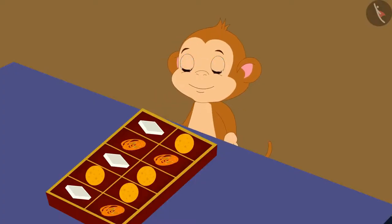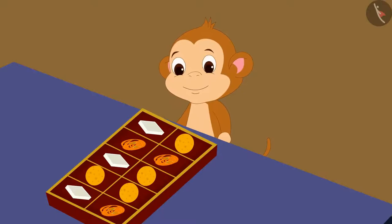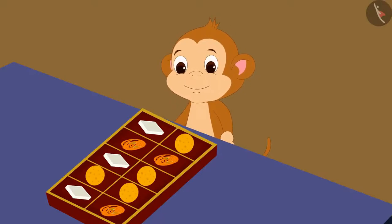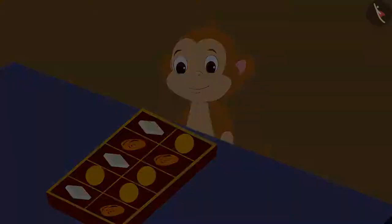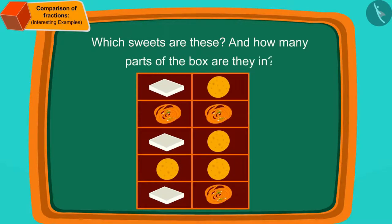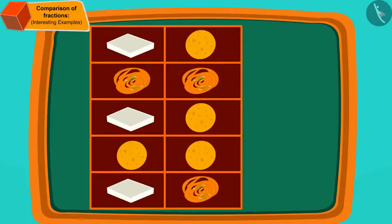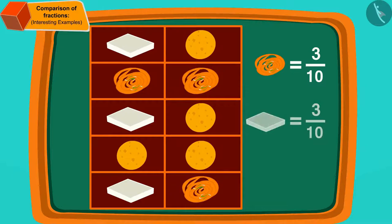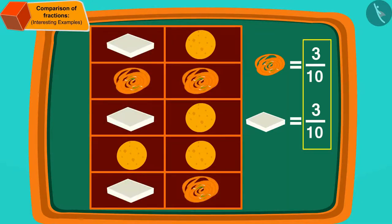When Babban looked at the box of sweets, he saw that there are 2 sweets filled in equal parts of the box. Can you tell which sweets are these, and how many parts of the box are they in? Well done children, you have found the answer correctly! Both jalebi and kaju katli are in 3 tenths part of the box.